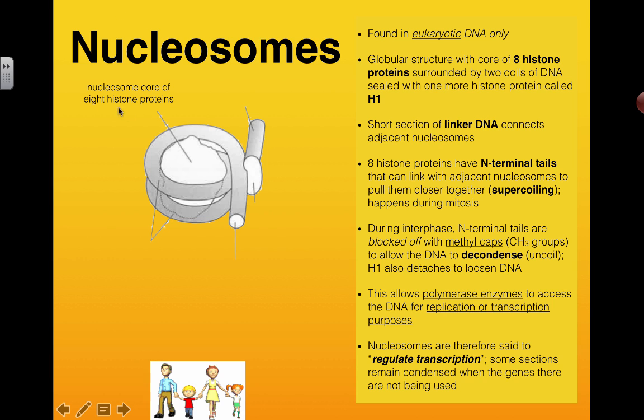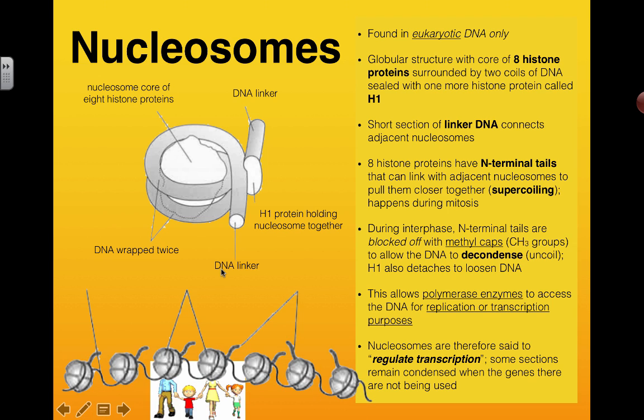So here's the nucleosome core, eight histone proteins in the center right there, a little bit of DNA connected to the next one. Here's the DNA looped around twice, there's that extra special histone protein called an H1 protein that's kind of holding it together. This thing can also come off when we need to actually be able to access the DNA and there's some more DNA linking to the next chain of these nucleosomes.